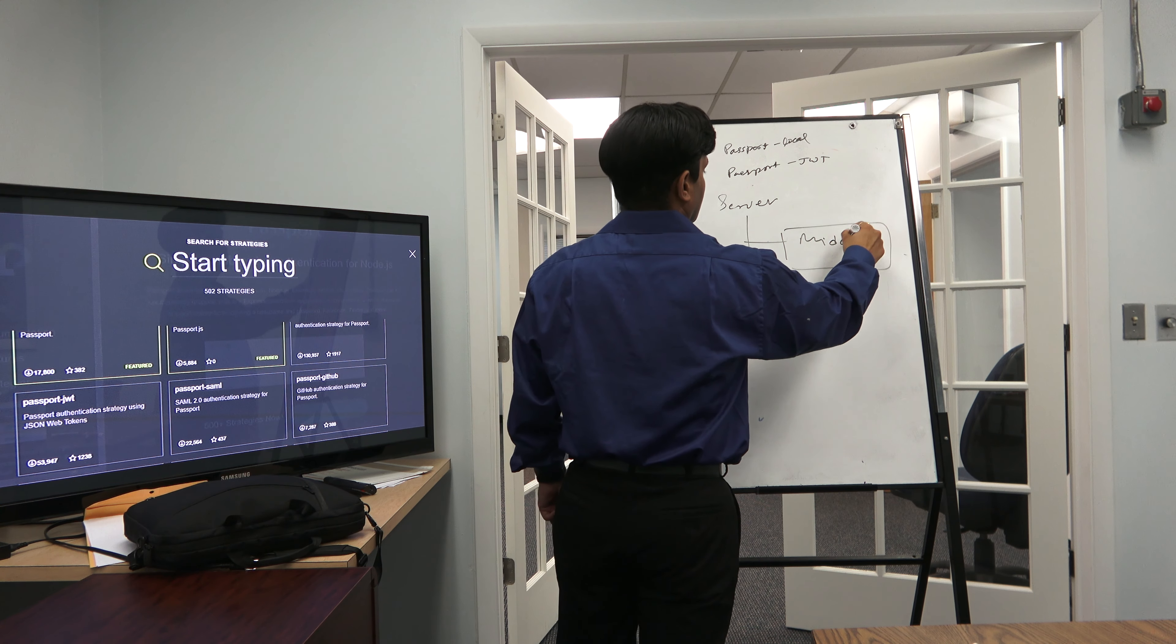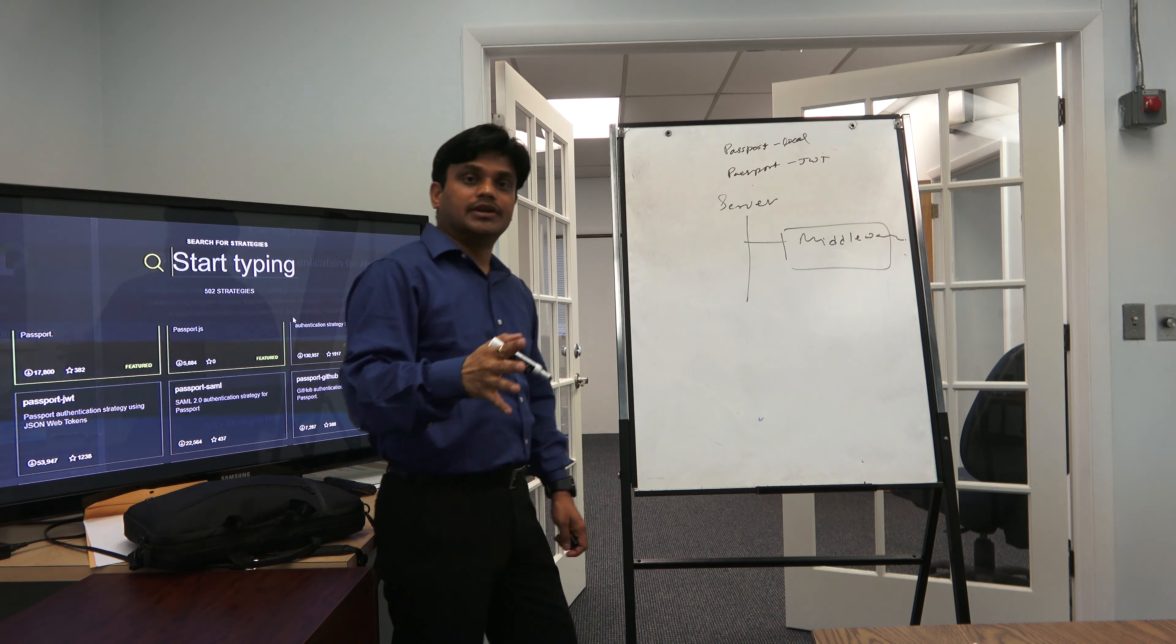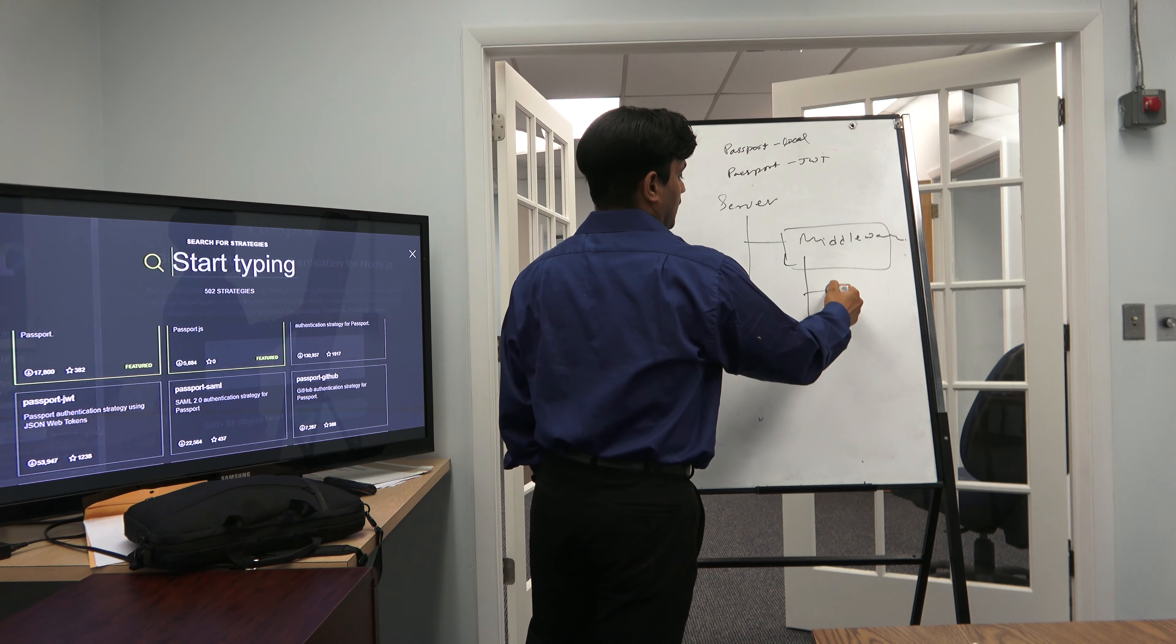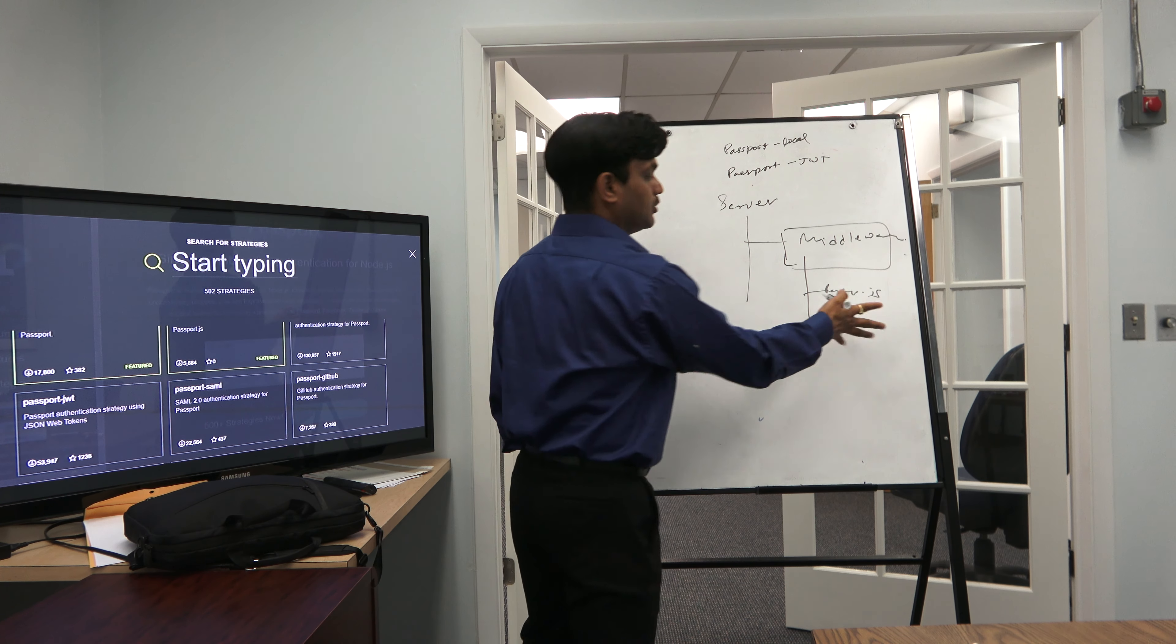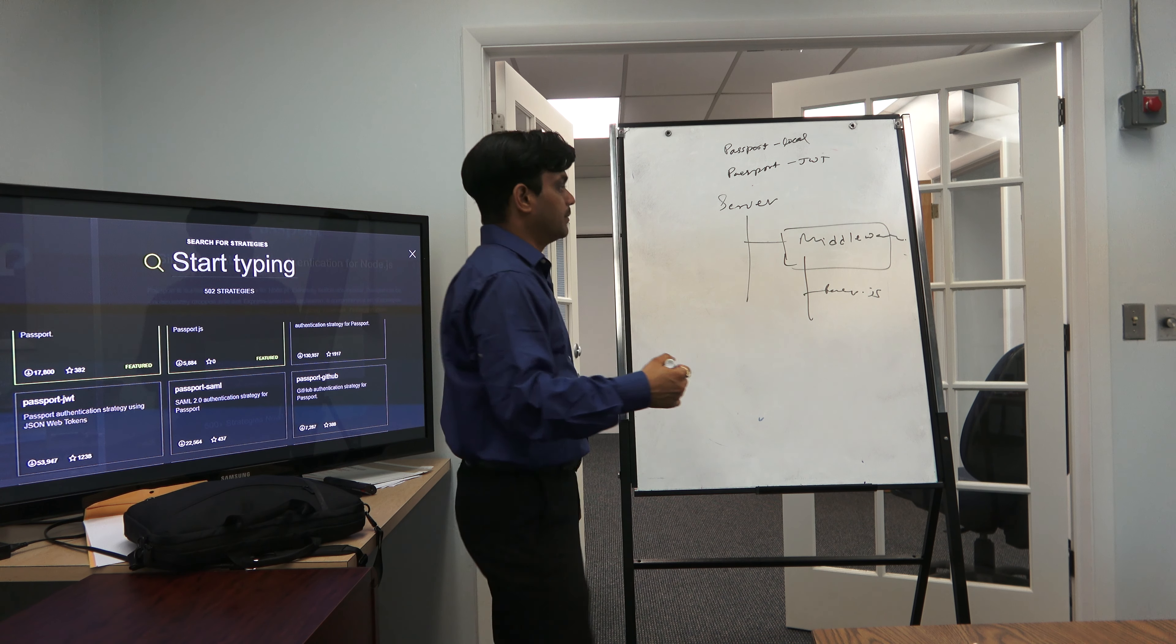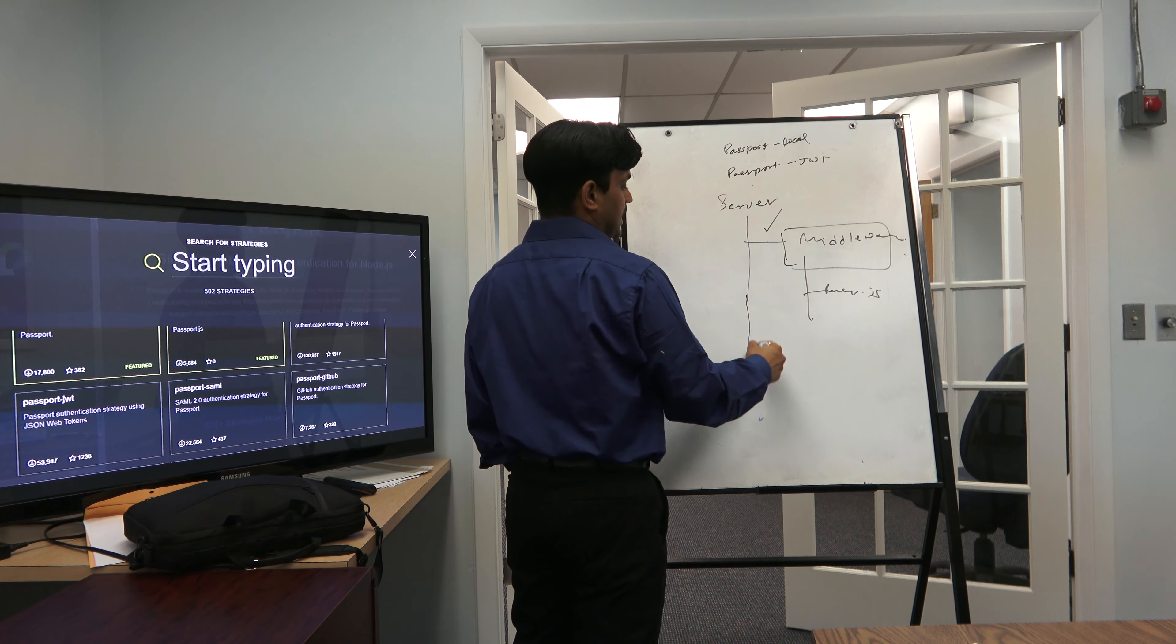We will use these two plugins. In the server side, we will create another folder called middleware. So far we have not written any middleware. We will create the middleware this time - new middleware we will call it passport.js. We will put the code there to do both local and JWT.